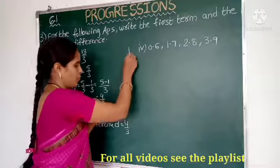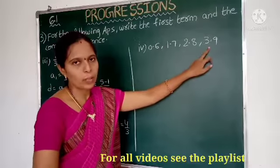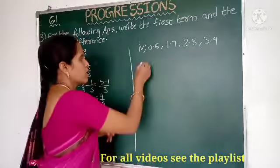Next, see the fourth question. Given: 0.6, 1.7, 2.8, 3.9. Here A1 equals 0.6 and A2 equals 1.7. What is the formula for D? D equals A2 minus A1. So 1.7 minus 0.6 — subtracting these two values: 7 minus 6 is 1, giving 1.1. So 1.1 is the answer.